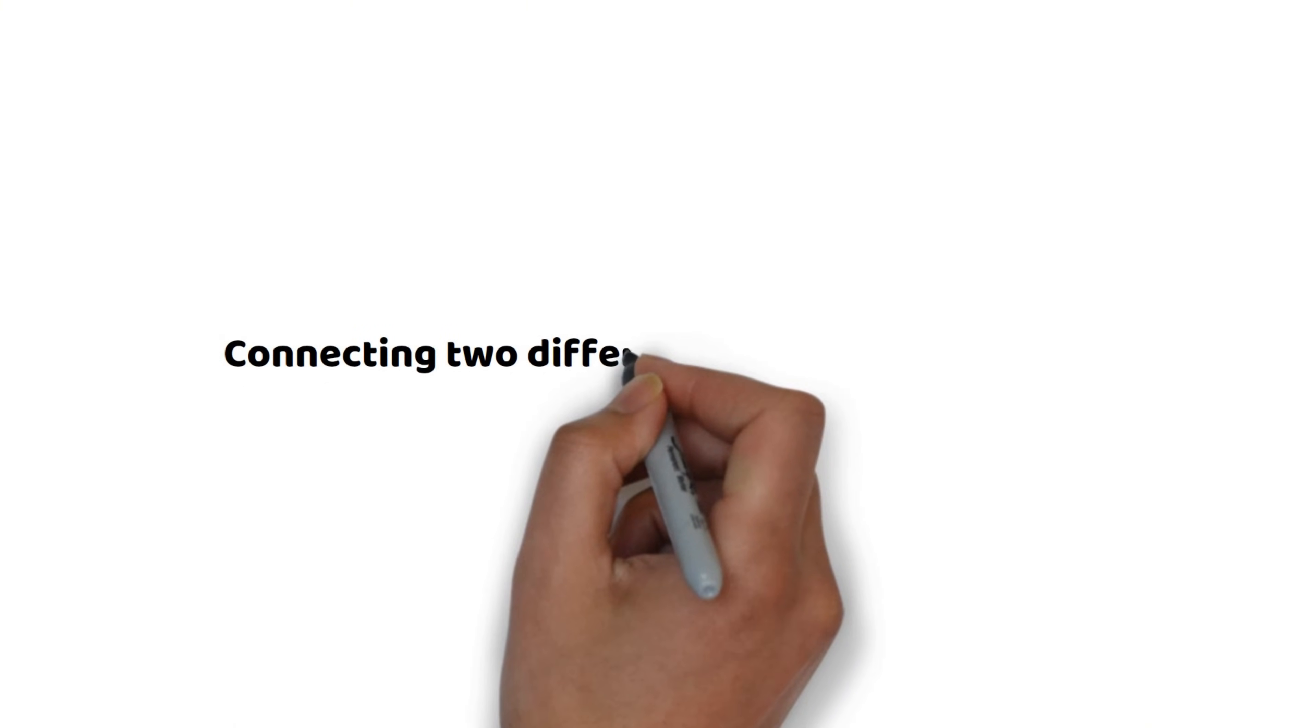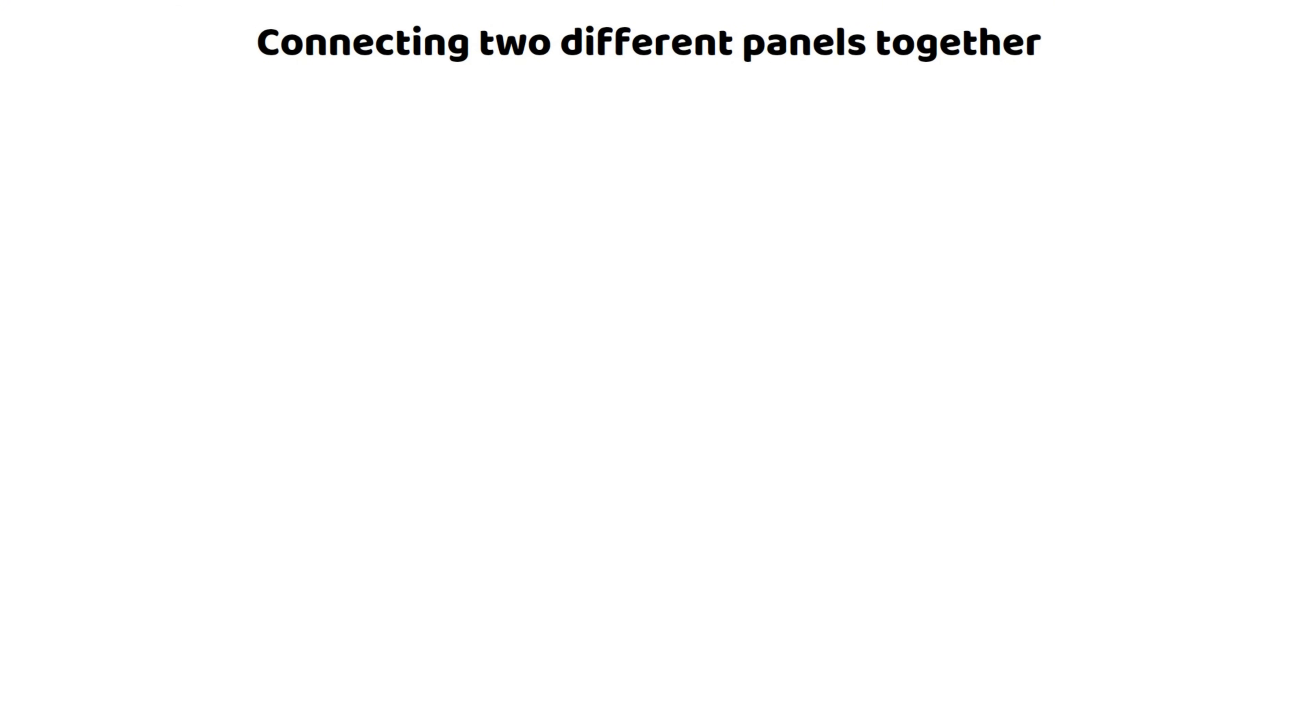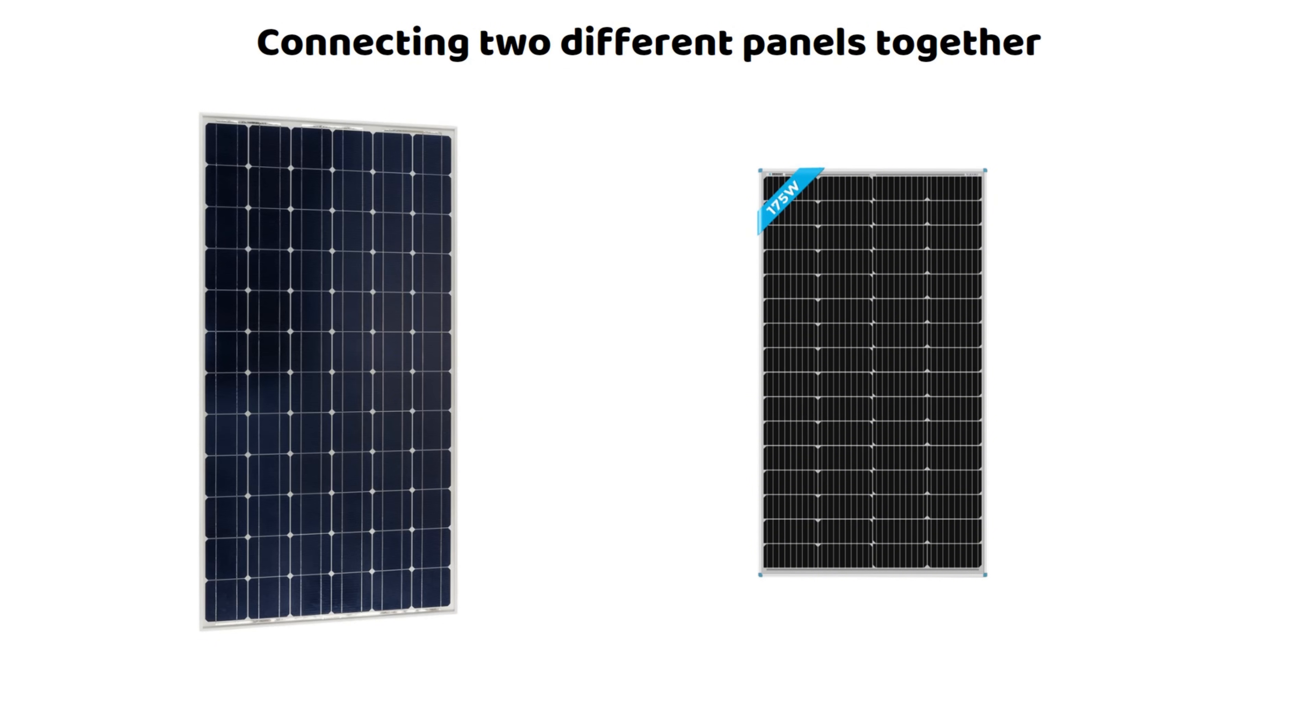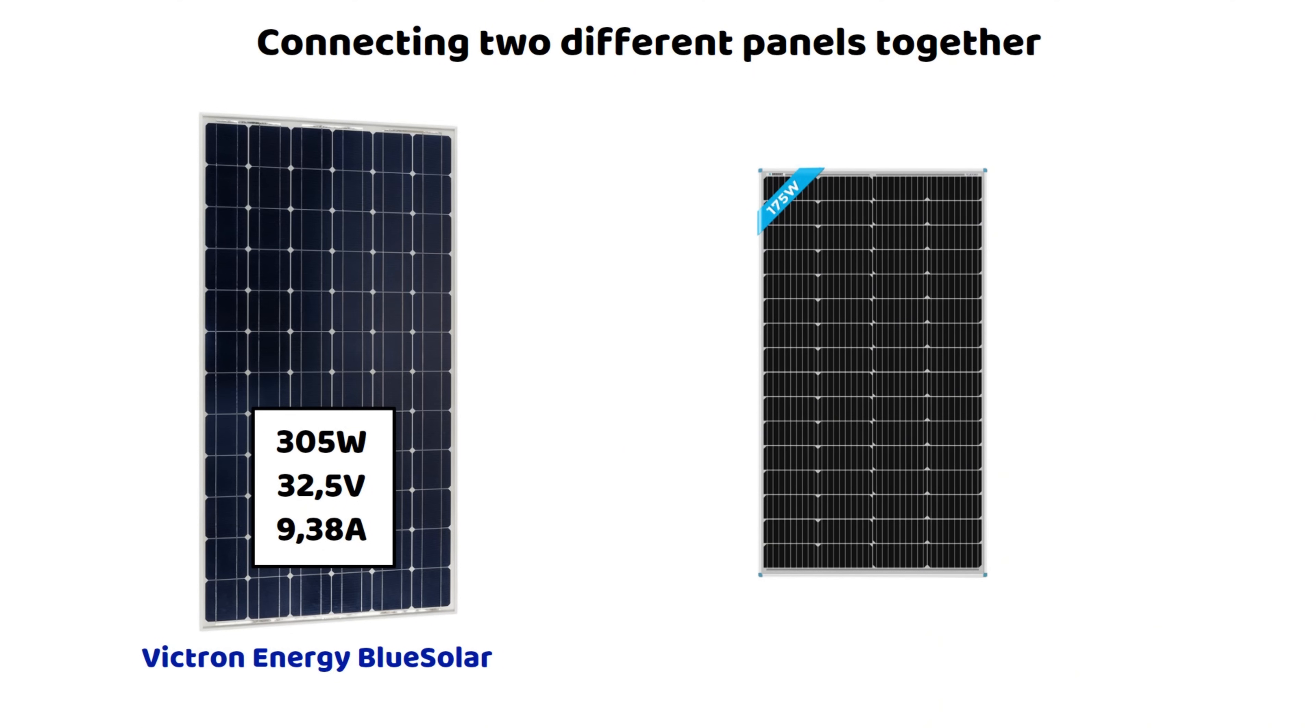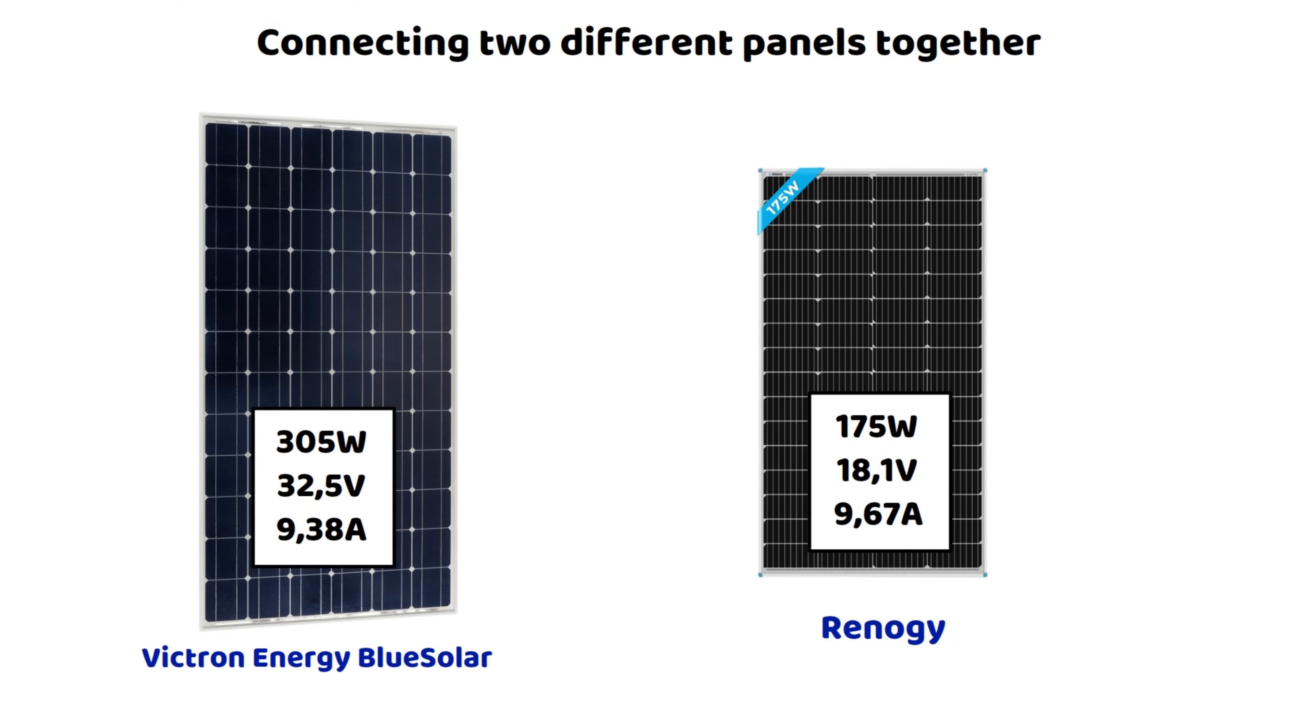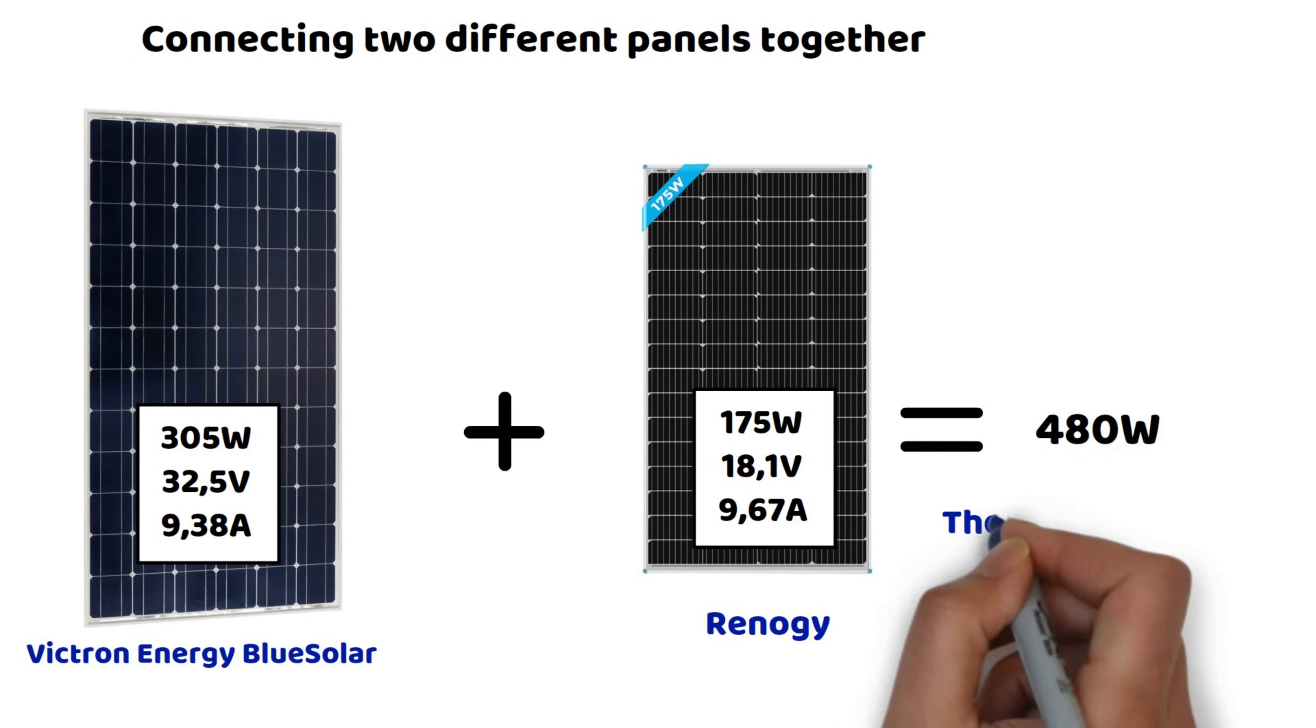Now, let's see what happens when we connect two panels of different brands and characteristics and the resulting consequences. We'll calculate the total power generated for each configuration, series and parallel. Characteristics of the two panels. Victron Energy Blue Solar, 305 watts, 32.5 volts, 9.38 amps. Renogi, 175 watts, 18.1 volts, 9.67A. The theoretical total power of these two panels is 480 watts, but that's just in theory.